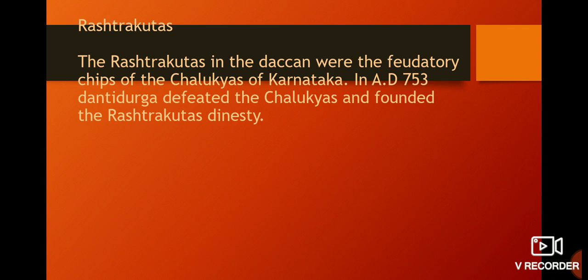The territory chiefs of the Chalukyas of Karnataka — Dantidurga — defeated the Chalukyas and founded the Rashtrakuta dynasty.